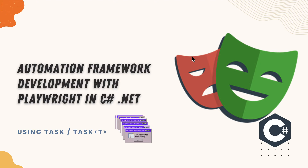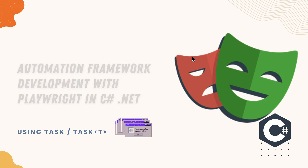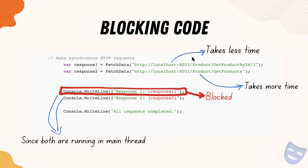Welcome to the next lecture. In this lecture we'll be talking about using Task and Task of type T. To recap what we have discussed so far in this section, we have been talking about the non-async nature of the web client, which is going to block our code. Every time you try calling both the request and the response is going to be blocked until both operations are successfully completed — that was the problem, because we are blocking the main thread.